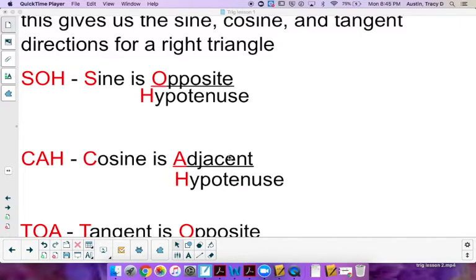CAH, cosine is the adjacent side, so the side next to the angle, divided by the hypotenuse of the triangle.